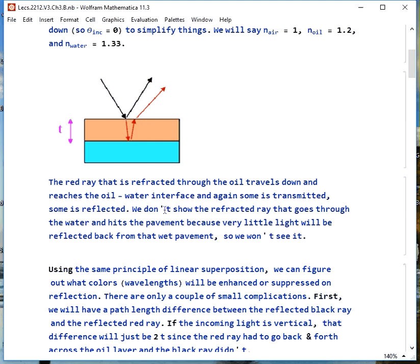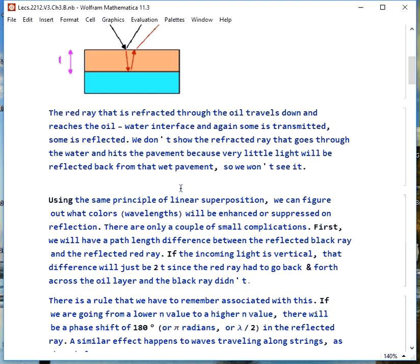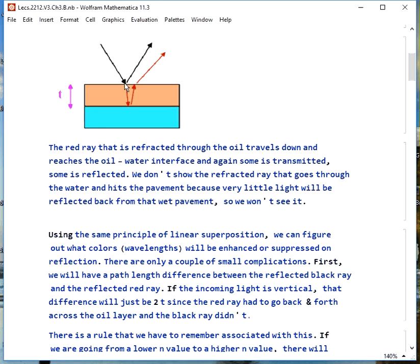There are a couple of complications. One is that when the light hits, goes from the air to the oil, it's going from a lower to a higher index of refraction and what actually happens there is there is a phase shift of 180 degrees or pi radians or half a wavelength when you go from a lower to a higher index of refraction.